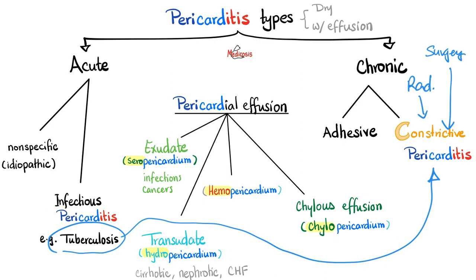Transudative fluid is hydropericardium — this fluid is clear, protein-poor, and cell-poor compared to exudate. Causes of transudate: just as in regular pathology — cirrhosis, nephrotic syndrome, and CHF. If you're more sophisticated, you can also add Kwashiorkor syndrome, malabsorption syndrome, third-degree burns, and much more.